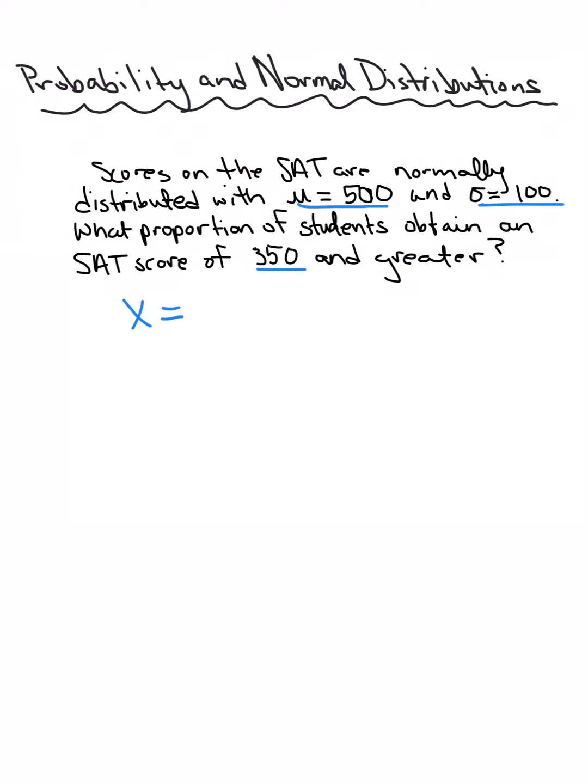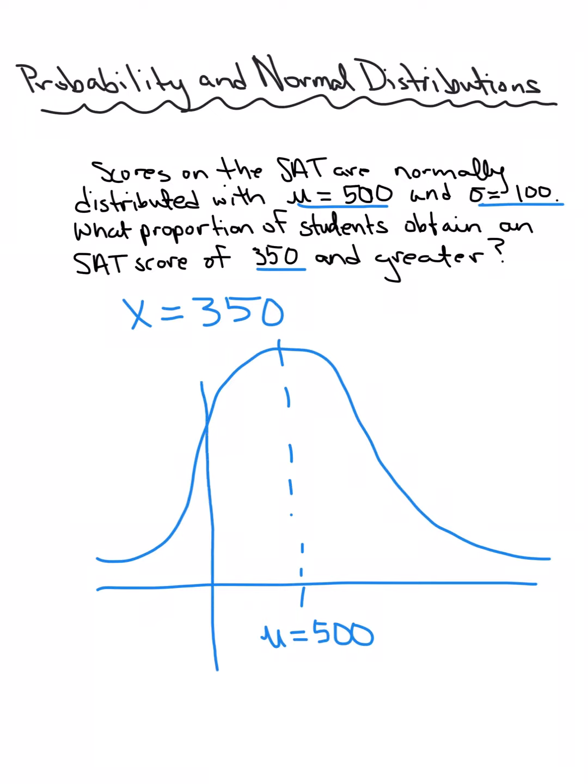So 350 is an X value. The first thing we want to do always is draw the distribution first so that we can know where we're looking specifically. When we have a distribution, I'm just going to sketch a normal distribution. Right down the very middle is that mean, mu, which is the population mean of 500. We just need to know that a score of 350 is lower than 500, so that score is going to be on the left-hand side of the mean.